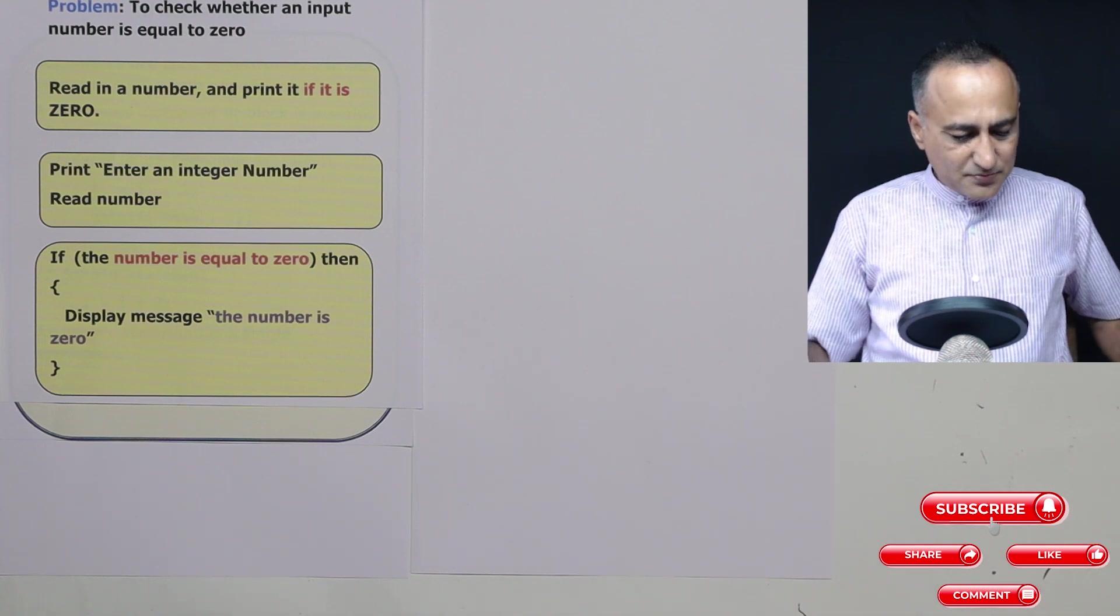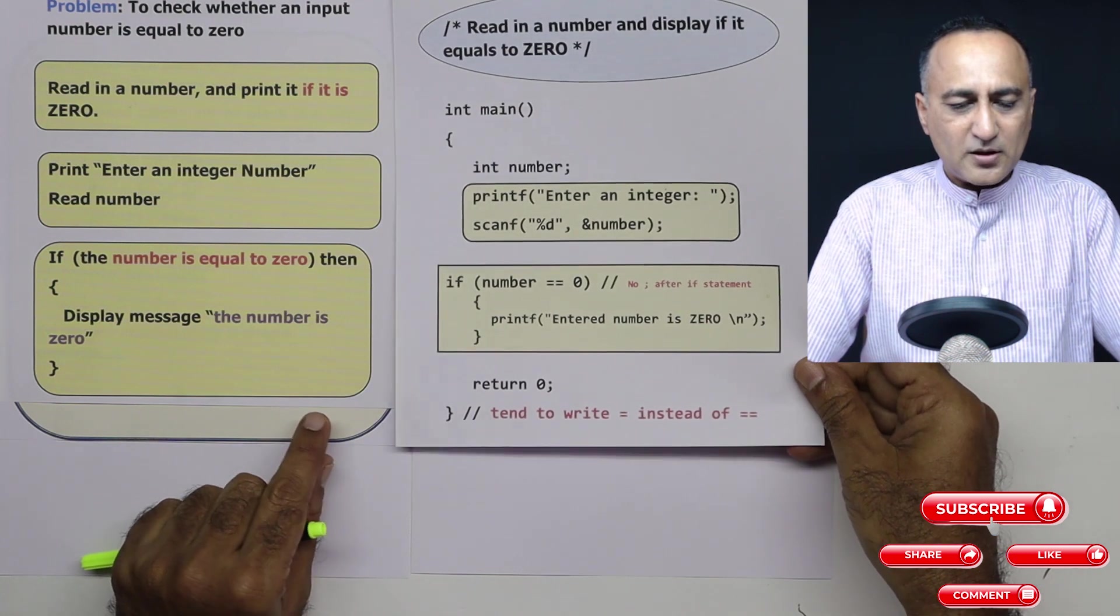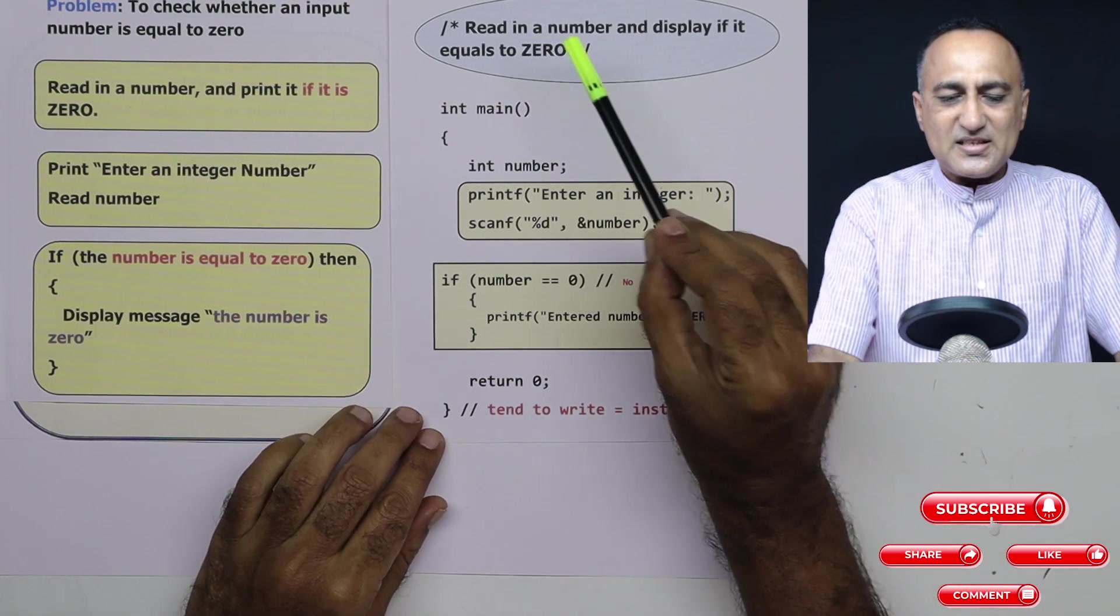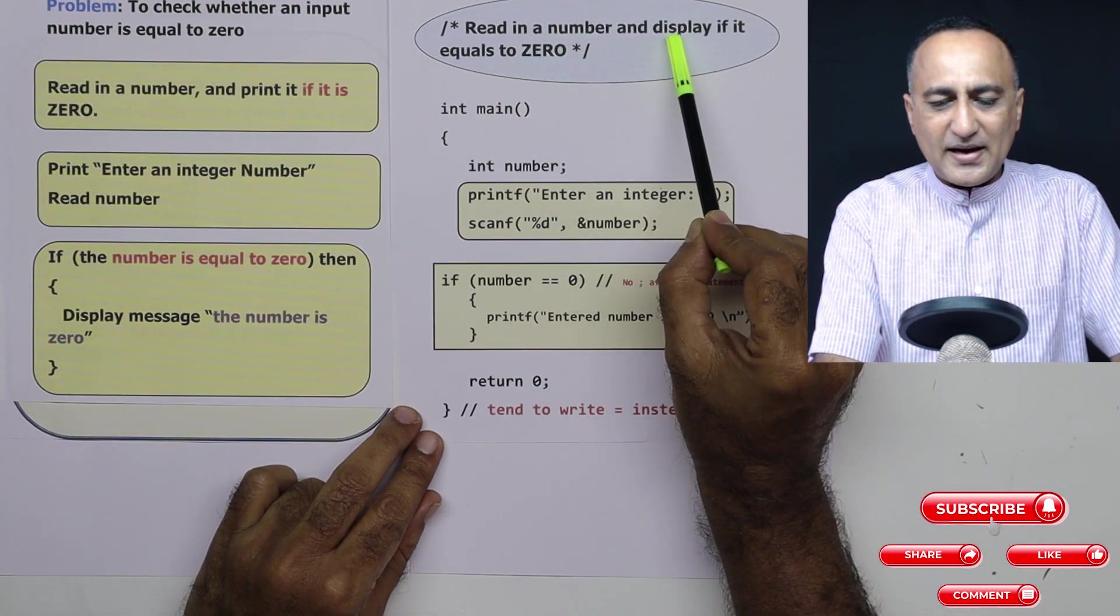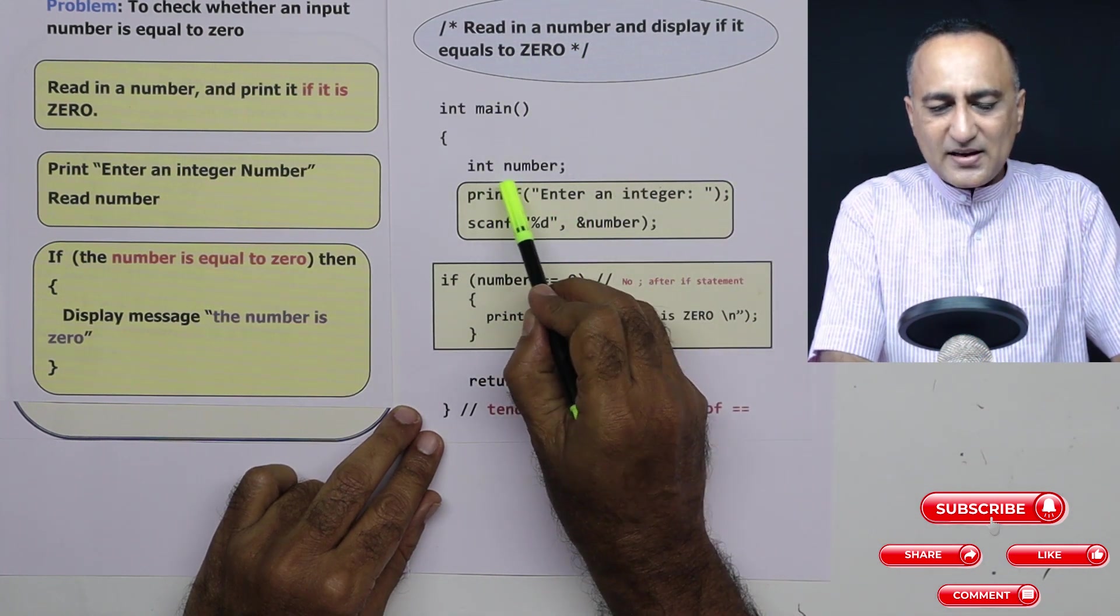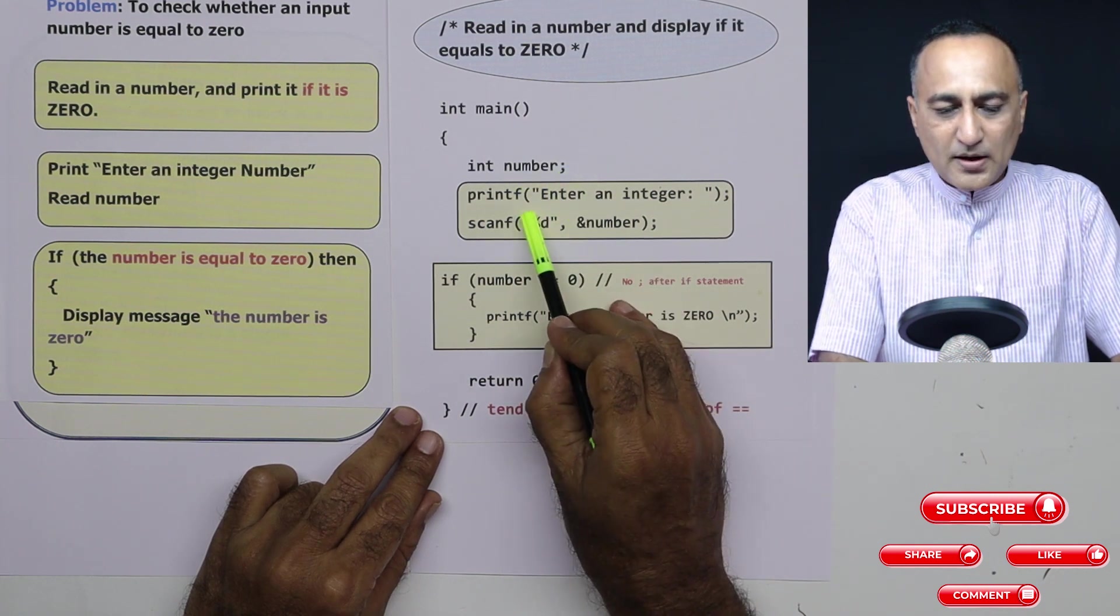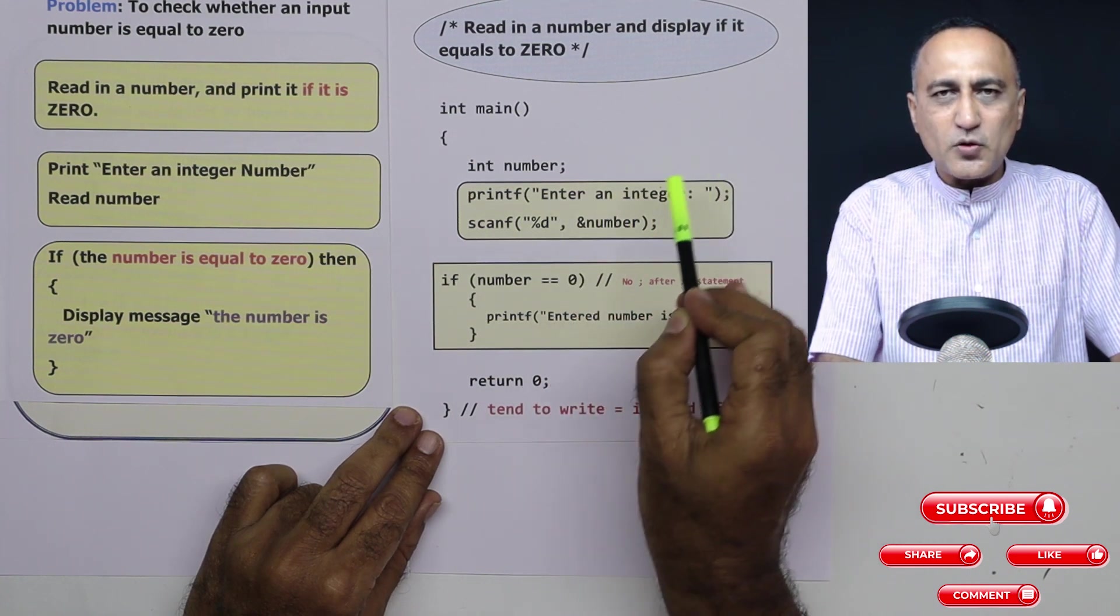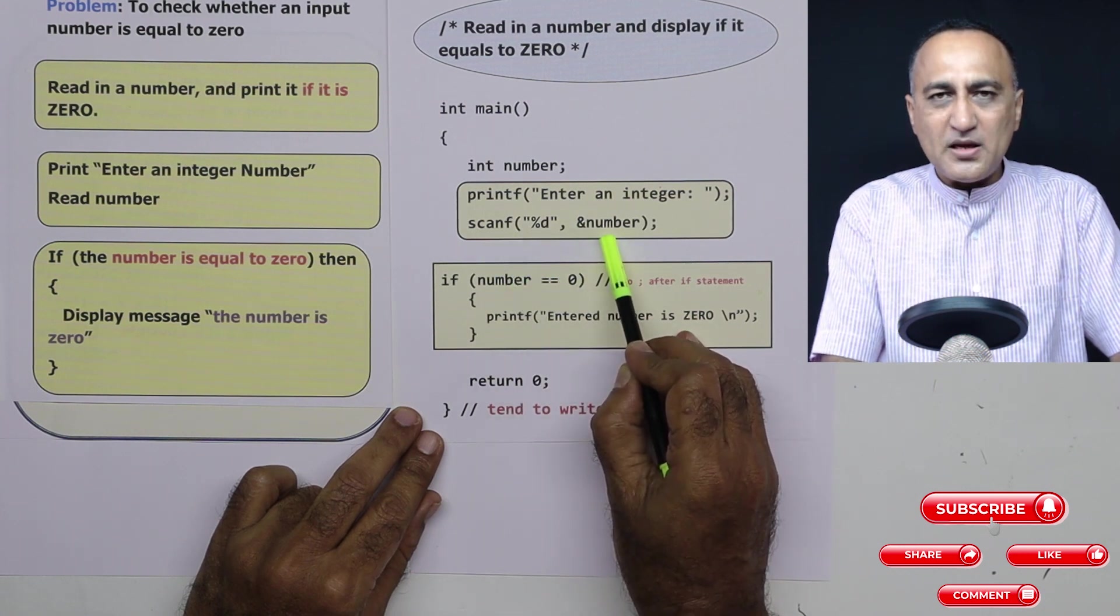Now if I have to do it in C, take a look how it will turn out to be. The concept will be very similar. So here what I am doing is this is a piece of code to read in an input integer and display if the number equals to zero. So I am declaring an integer variable called number. I am not giving it any initial value. I am asking the user enter an integer. User is going to enter some number. So using scanf I am reading the number into a memory location.